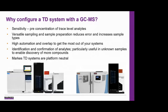The high automation of a TD-GCMS system, especially with the easy overlap mode, provides enhanced productivity, where the next sample can be loaded and desorbed while the GCMS is still running the previous sample. TD-GCMS can also be used for the identification and confirmation of analytes, which is particularly useful for unknown samples, enabling discovery of more compounds by spectrum matching with established libraries. Lastly, the Marques TD systems are platform neutral, meaning they can be added to any brand of GCMS, including existing systems, representing lower capital investment overheads.